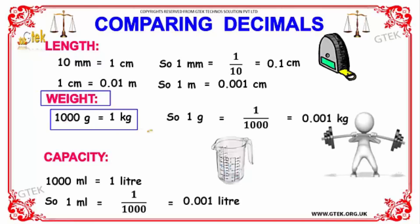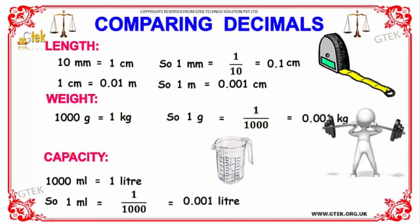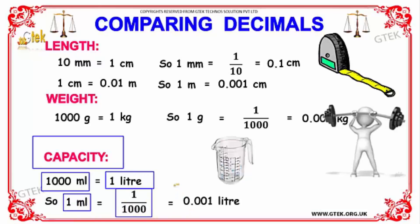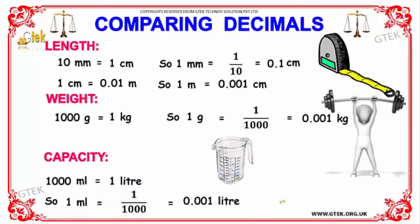In terms of weight: 1000 grams equals 1 kilogram, so 1 gram equals 1/1000, that is 0.001 kilograms. In terms of capacity: 1000 milliliters equals 1 liter, so 1 milliliter equals 1/1000,